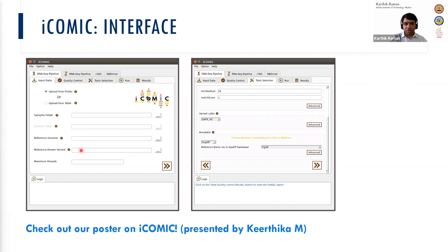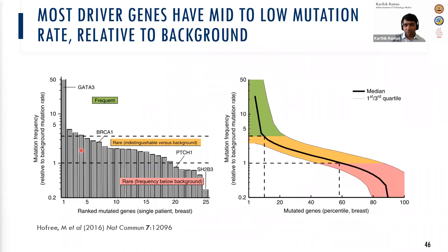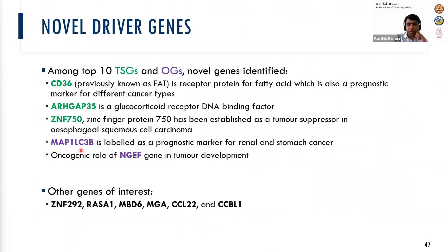Everything is out of the box — you just do a Conda install of iCoMIC and you have the whole thing. It also incorporates custom algorithms for identifying tumor suppressor genes and oncogenes. This algorithm is particularly interesting because most driver genes have low mutation frequency relative to background, so frequency-based approaches aren't good enough. Using machine learning rather than just looking at frequency, we were able to identify many more novel genes.